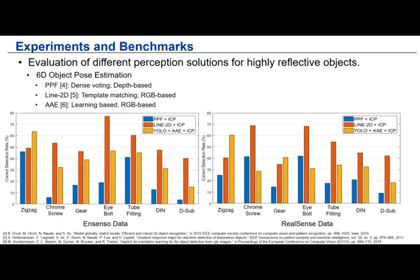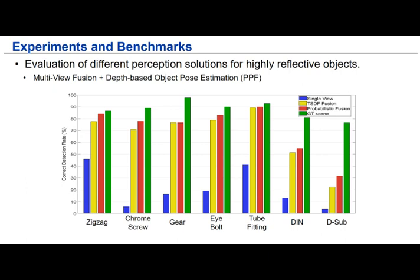For object pose estimation, we evaluated three approaches: PPF, LINE2D, and AAE. PPF is a pure depth-based approach, and the other two are RGB-based. For each algorithm, we apply ICP at the end for final pose refinement. We can see that because of the large missing depth data, the depth-based PPF has the worst performance. In comparison, LINE2D and AAE work much better because they only use depth for ICP refinement. However, when we improve depth data quality by multi-view depth fusion and feed the fused data to the PPF pose estimator, the performance can be significantly improved. Nevertheless, the gap between the fused data and the fused ground truth mesh is still quite large.